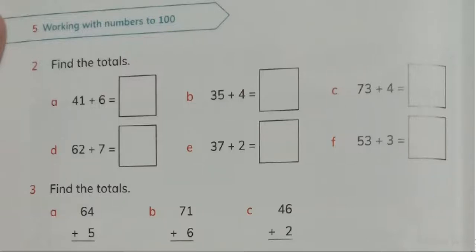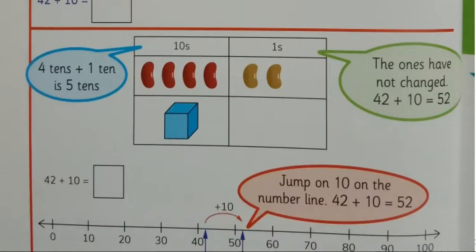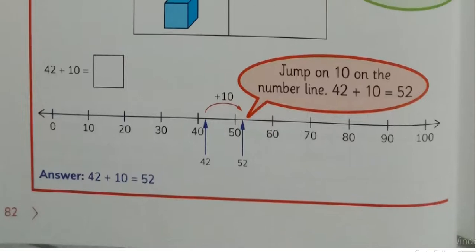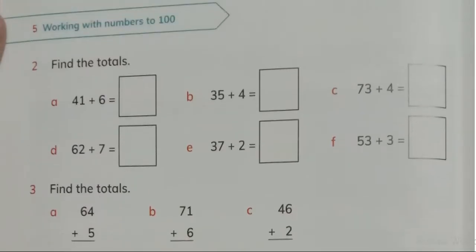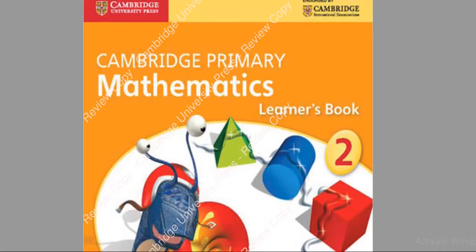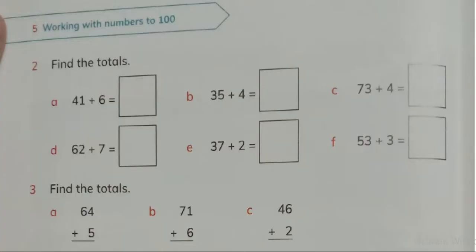Bismillahirrahmanirrahim and Assalamu alaikum. Somebody has sent me this page on my WhatsApp number and wants me to do this page on my YouTube channel. This is page number 82 of the learner's book, Cambridge Primary Mathematics learner's book 2. This book is for grade 2 from Cambridge University Press.